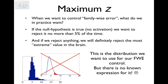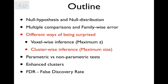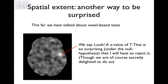This is the distribution we want to use to achieve family-wise error control. There is no simple closed-form expression for it — though there is an approximative expression for the tail, and we will return to this later. But first we're going to talk about a different way of being surprised: cluster-wise inference. Here we're no longer looking at the z-score in a single voxel; instead we're looking at the size of contiguous voxels over a certain threshold — the spatial extent. For example, a fast z-value of 7 would be very surprising under the null hypothesis.